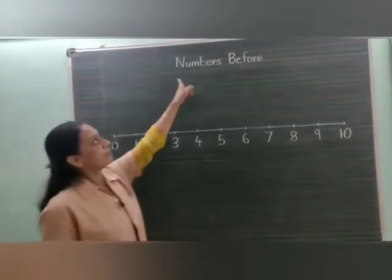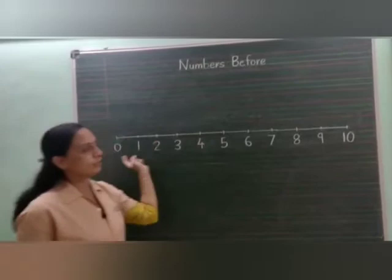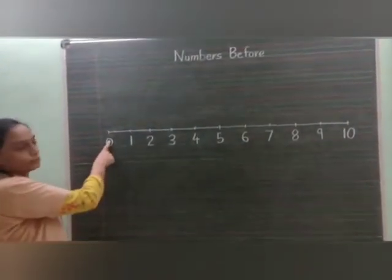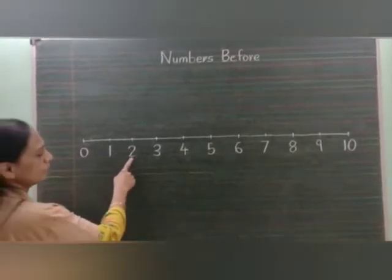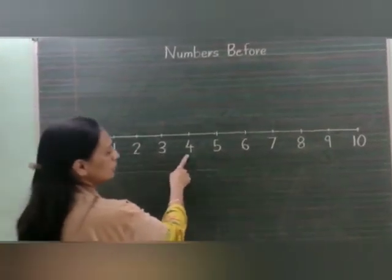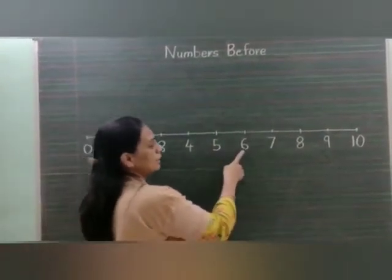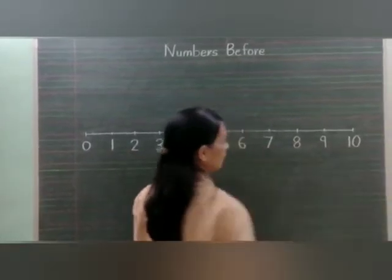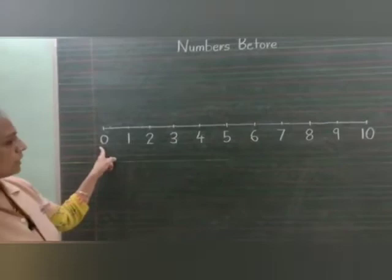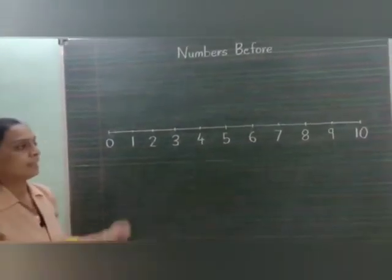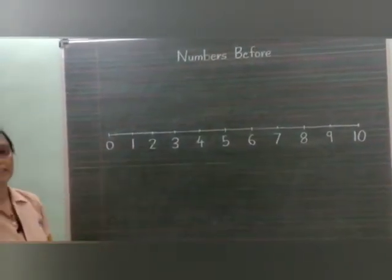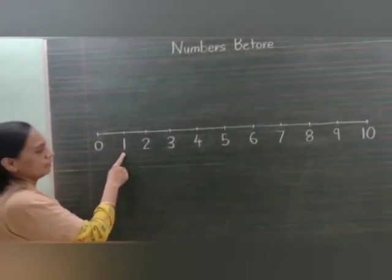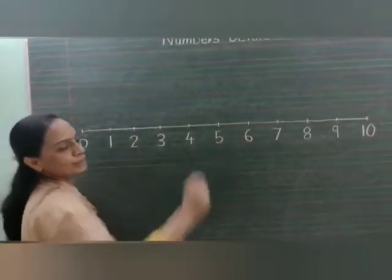Now we will learn the concept of 'numbers before' through this number line. This is the number line — it starts from number 0, 1, 2, 3, 4, 5, 6, 7, 8, 9 and 10. When we start from 0 and go to number 10, we say the numbers after. So after 0 is number 1, after 1 is 2, and so on.